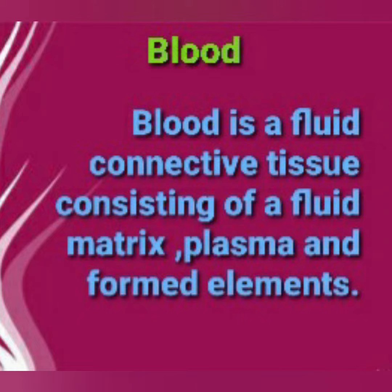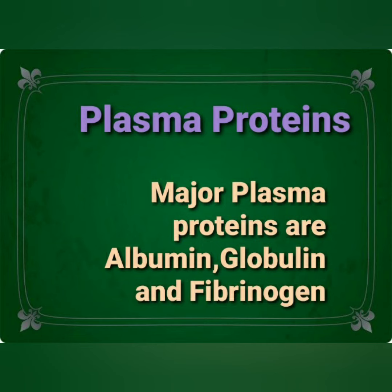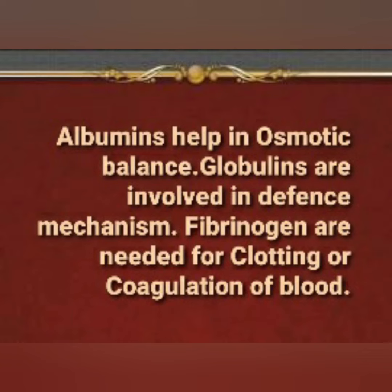Blood is a fluid connective tissue consisting of a fluid matrix — plasma — and formed elements. Plasma is a straw-colored viscous fluid constituting nearly 55% of the blood. 90 to 92% of plasma is water, and proteins constitute 6 to 8%. The major plasma proteins are albumin, globulin, and fibrinogen, and their percentages are shown here. Observe and try to understand.